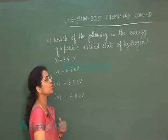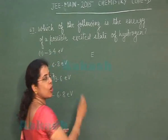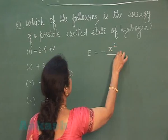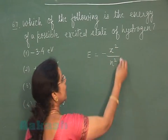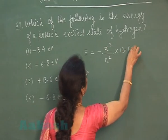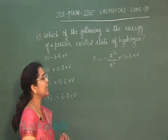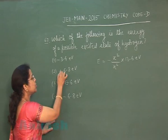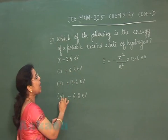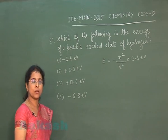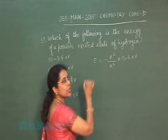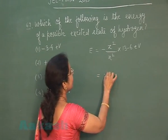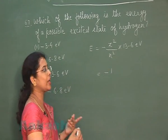The energy of an electron in any orbit can be calculated using the formula: E = -(Z²/n²) × 13.6 eV. First, the energy of an excited state must have a negative sign, so two options with positive energy are omitted. In this formula, Z is the atomic number of hydrogen, which is 1, and so Z² = 1.